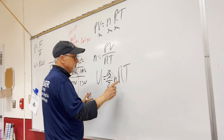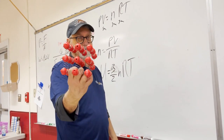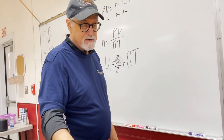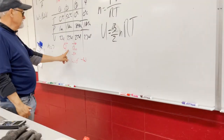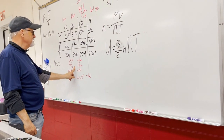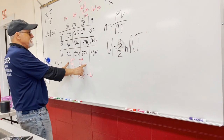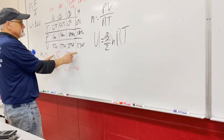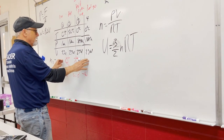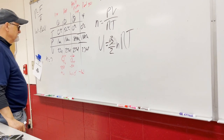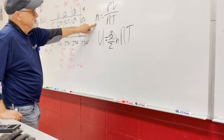We have a larger internal energy at state two, and then it returns to the same internal energy at states one, three, and four. So internal energy doesn't change overall for the cycle. Once we have the number of moles, we can calculate U for each state.